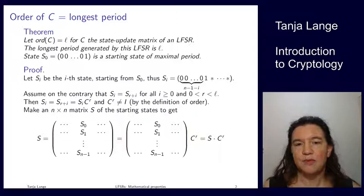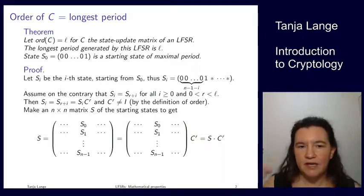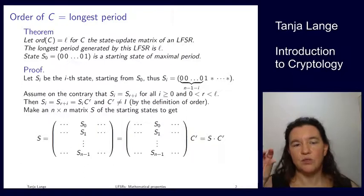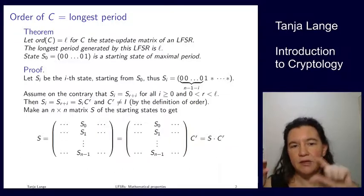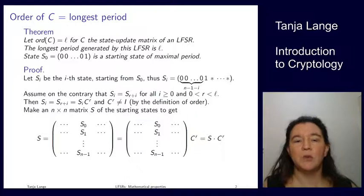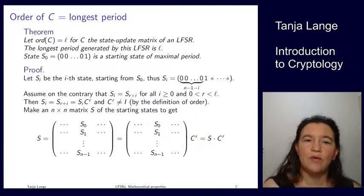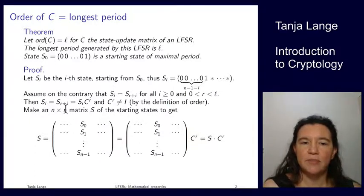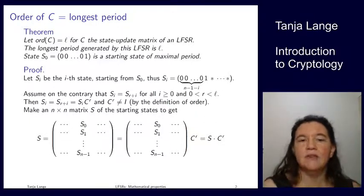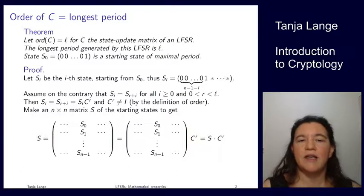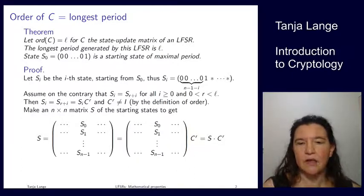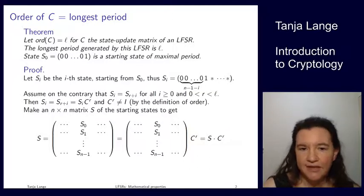Then we're using again how the state update matrix works. So that was S1 is S0 times C. And then you iterate this multiple times. So Si is C to the i with an S0 in front of it. So what we have here is I'm starting with the definition that we just picked. So I'm starting with the periodicity. So Si equals SR plus i. And then I'm replacing only the R-fold application of the state matrix and keeping the Si here the same as it was. So I'm getting Si times C to the r. And by definition of the order, C to the r is... and this holds for any i larger than 0.